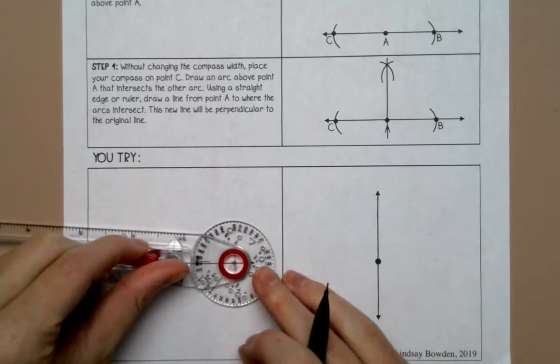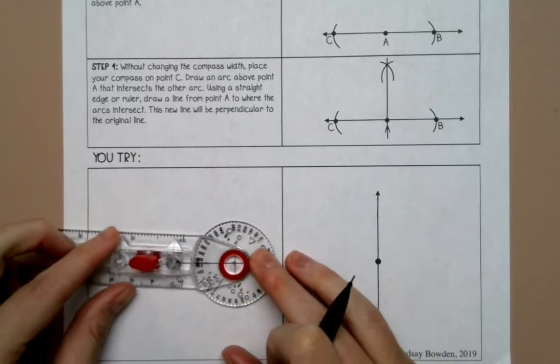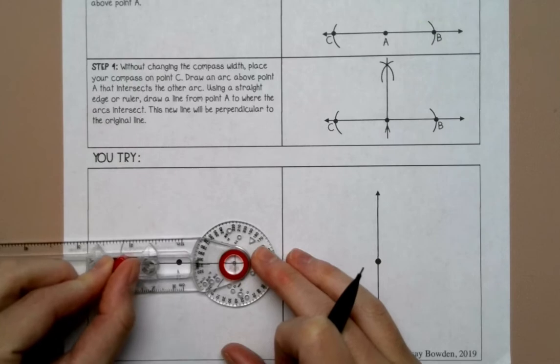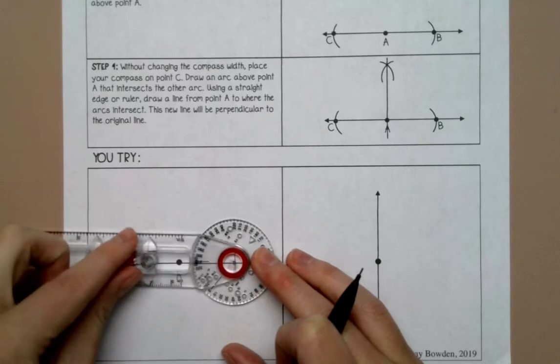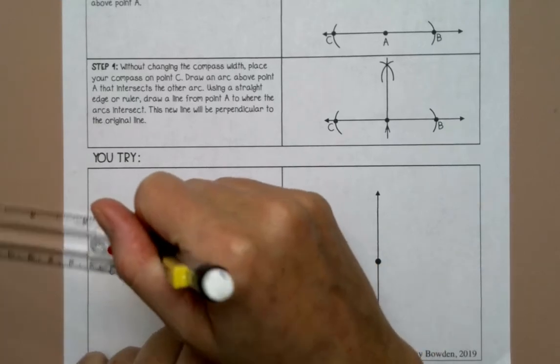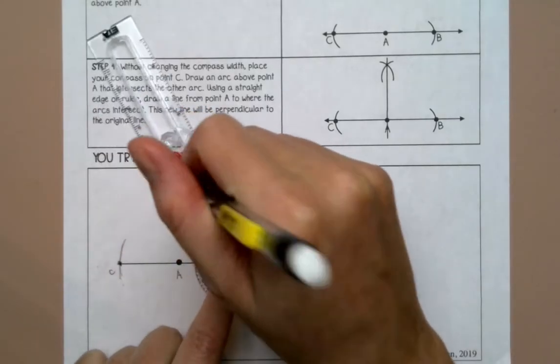Then I'm going to put my compass on point B and I'm going to make sure that my compass is about between A and C. So about here, so as you can see it's about between A and C. And I'm going to draw an arc above A.